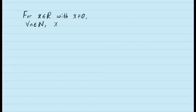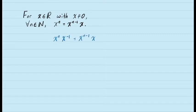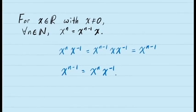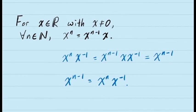If we take a closer look at the definition of natural number exponents, we can see that the expression x to the exponent n equals x to the exponent n minus 1 times x is equivalent to x to the exponent n minus 1 equals x to the exponent n times x inverse. We get this simply by multiplying both sides by x inverse.